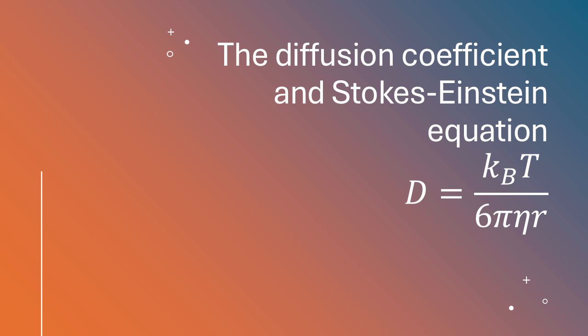There are other factors that can complicate things, like interactions between the particles themselves or with the surrounding environment. So it sounds like while the Stokes-Einstein equation is a powerful tool, we need to be mindful of its limitations, especially when dealing with complex systems like the human body. Absolutely. But despite these limitations, it's still an incredibly useful tool for understanding and predicting diffusion in a wide range of contexts. It's helped us make incredible advances in medicine and other fields.